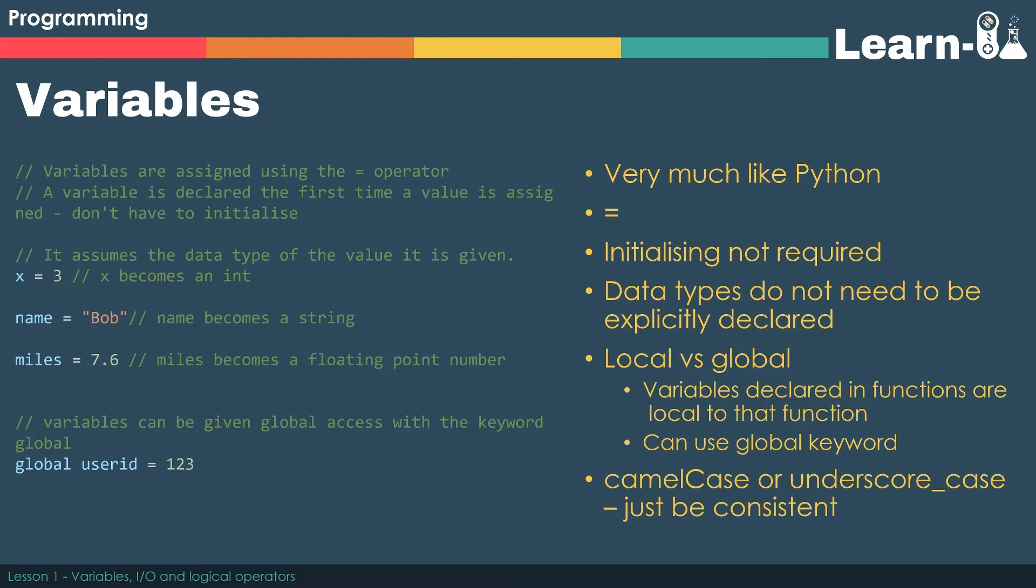Variables can also have scope. They could have scope that is just local to a procedure or function and not be accessible outside of that subroutine, or they could be global, and you can use the global keyword to denote this. In terms of writing variable names, stick to camel case or underscore case, no numbers or symbols at the start, and no spaces between words.